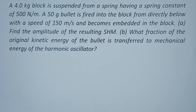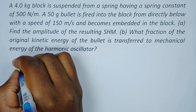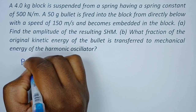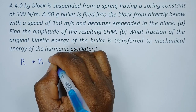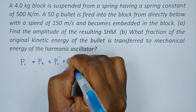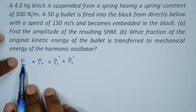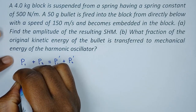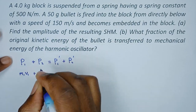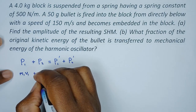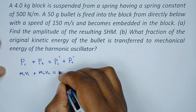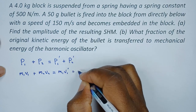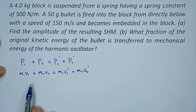We're going to start by looking at how the two relate in terms of their momentum. According to the law of conservation of momentum, we have two objects, so we give them their initial momentum: momentum one plus momentum two equals momentum one final plus momentum two final. Momentum one is m1*v1, momentum two is m2*v2, and everything equals m1*v1' plus m2*v2' final.